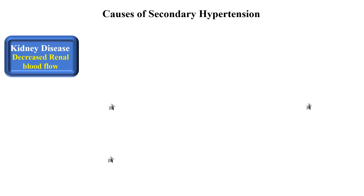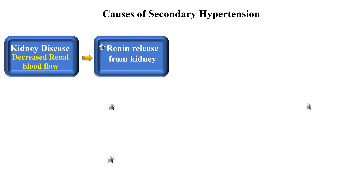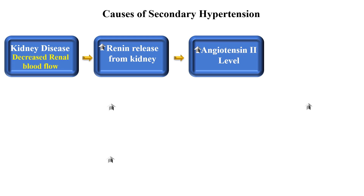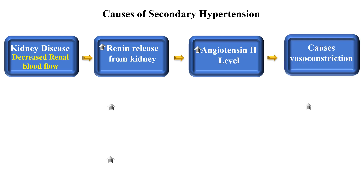Let us see the causes of secondary hypertension. Whenever there is kidney disease or any other disease that damages kidney tissue, the flow of blood towards the kidney is reduced. Once blood flow to the kidney is reduced, specialized cells in the kidneys secrete renin. Renin is transferred to the blood where a series of changes lead to the formation of angiotensin 2. This angiotensin 2 causes vasoconstriction — narrowing of blood vessels — which leads to increased blood pressure. The renin-angiotensin system will be discussed in detail later.